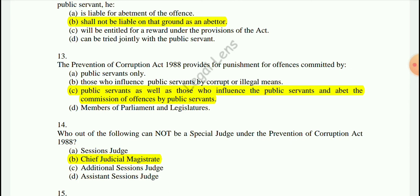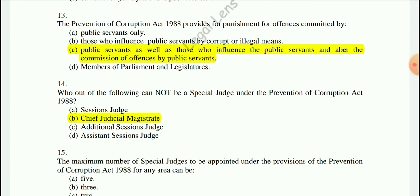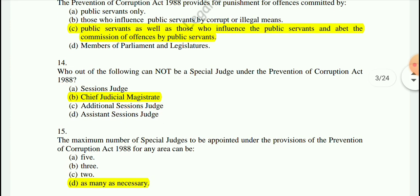Question 13: The Prevention of Corruption Act 1988 provides for punishment for offenses committed by — the correct option is C — public servants as well as those who influence the public servant and abet the commission of the offense by the public servant.